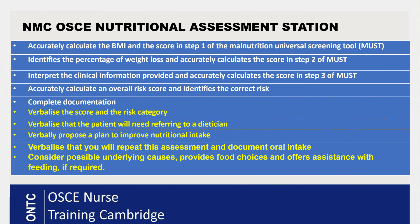Verbalize that you will document what your patient is eating and drinking on a chart in their notes. State that you will repeat this assessment according to your local policy — for hospital patients this is normally every week. Also verbalize that you will consider possible underlying causes by talking with your patient to find out what is causing the reduced intake. Offer food choices and assistance with feeding if required. These are all the verbalization points to communicate to your examiner.